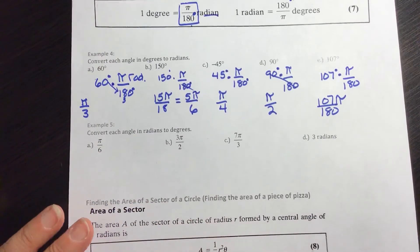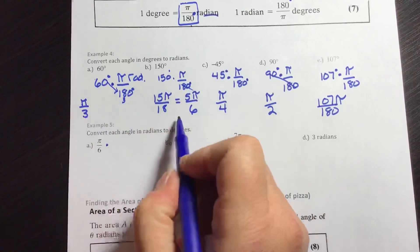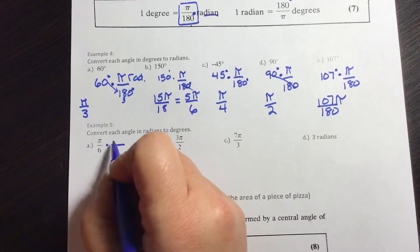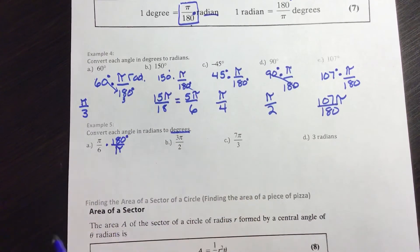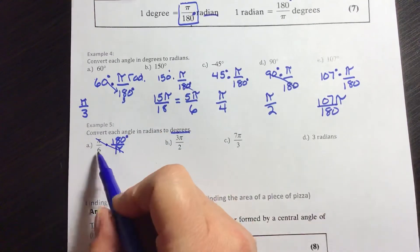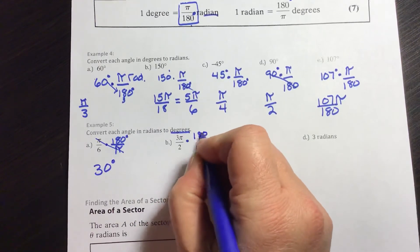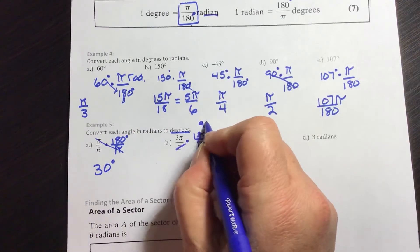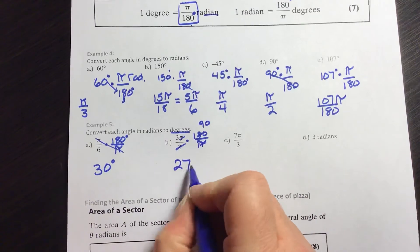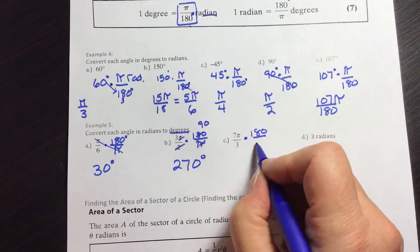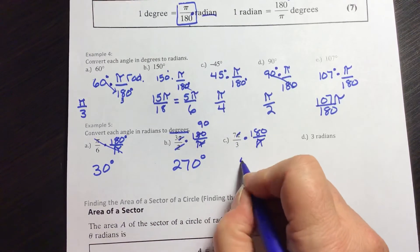Now going backwards, converting radians to degrees: for π/6, multiply by 180/π — the π's cancel, 6 goes into 180 thirty times, giving 30 degrees. For 3π/2 × 180/π, 2 goes into 180 ninety times, 90 × 3 = 270 degrees. For 7π/3 × 180/π, 3 goes into 180 six times, 6 × 7 = 420 degrees.